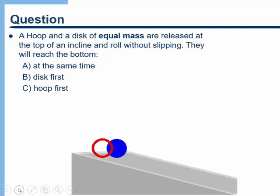Usually when I ask this question in a classroom environment, most students think that the disc and the hoop will arrive at the same time, and that makes sense based on what we've learned before in the course. However, it turns out that actually the disc is the one that's going to win the race. In order to understand that, and ultimately to figure out the final velocity for each of these objects at the bottom of the ramp, we're going to have to get into the details of rotational motion.